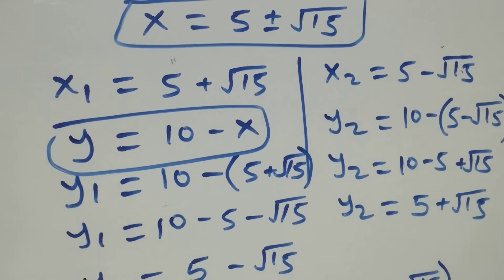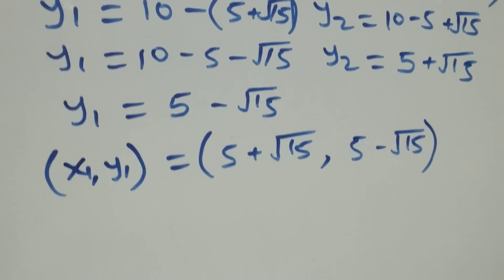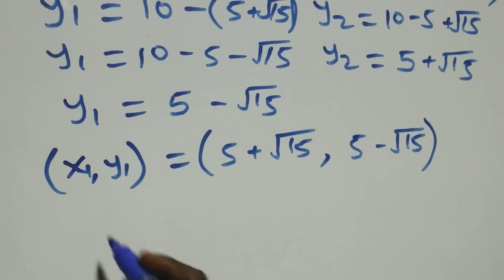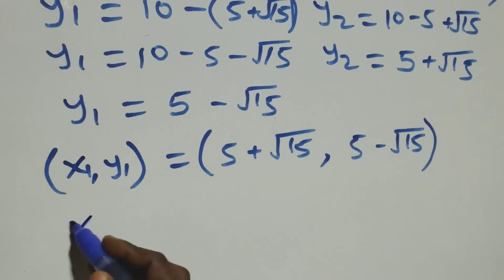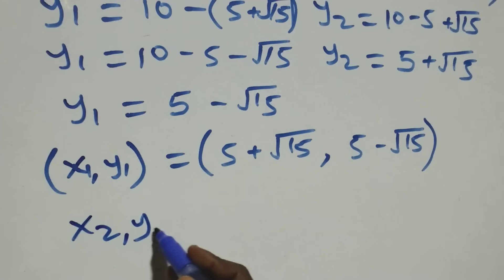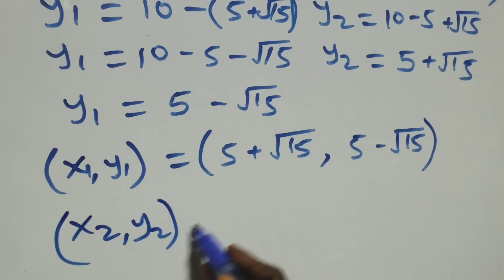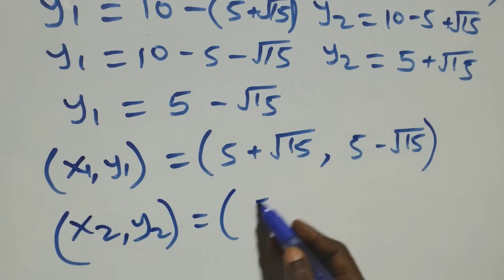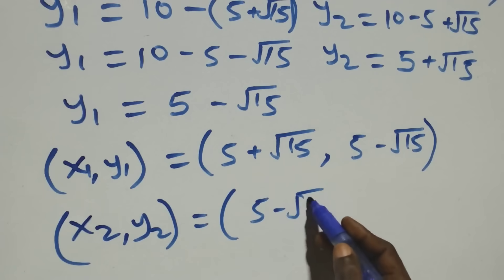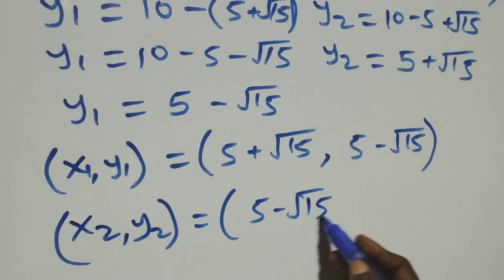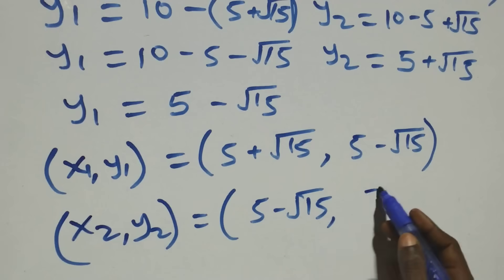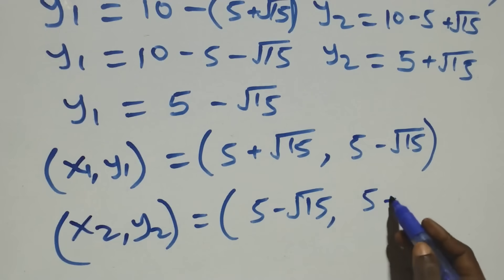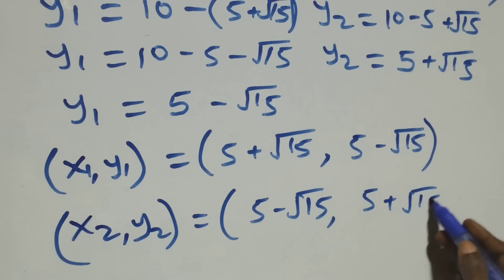The second set of solutions is: x₂, y₂ equals to (five minus root fifteen, five plus root fifteen).